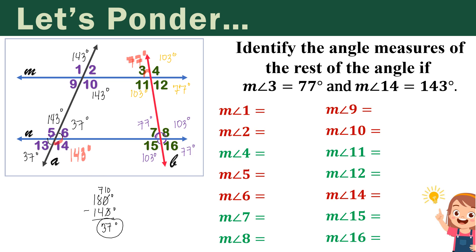Alternate interior angles are congruent angles. For angle 2, this is the corresponding angle of angle 6, so it would be 37 degrees as well. And for angle 9, this is also 37 degrees since it is vertical with angle 2. Or, angle 9 is the alternate interior angle of angle 6, so they have the same measure of 37 degrees. Whichever relationship you apply, you would arrive at the same answer, provided you apply the correct relationship between the angles.